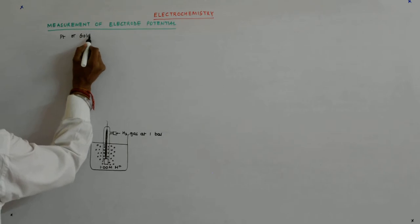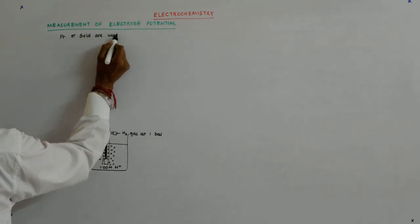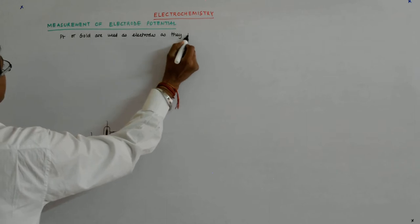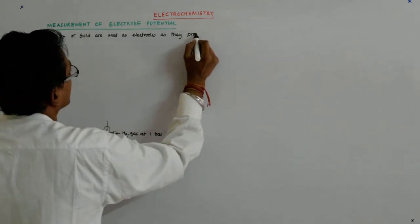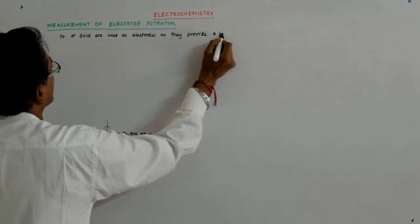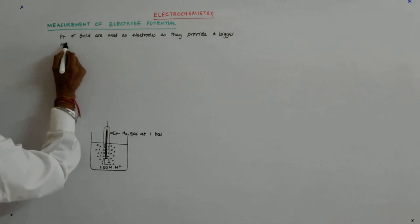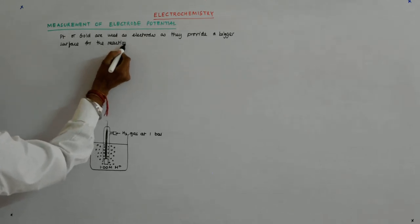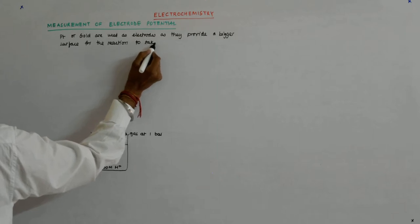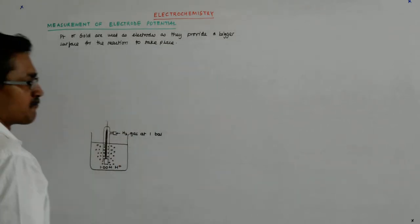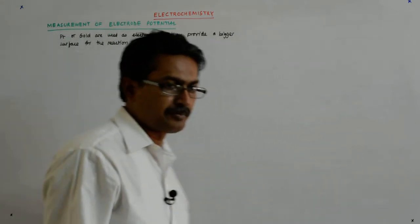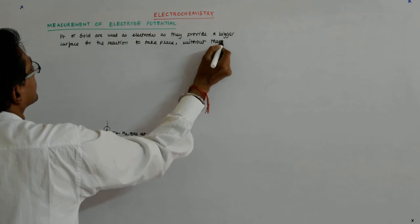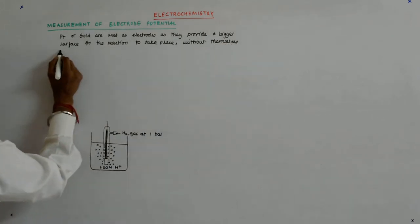Platinum or gold are used as electrodes as they provide a bigger surface for the reaction to take place without themselves participating in the reaction.